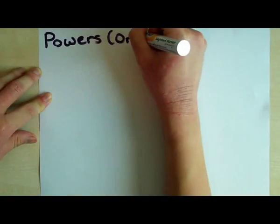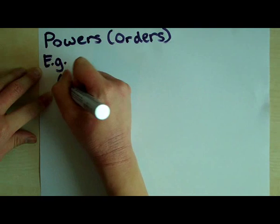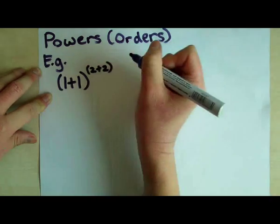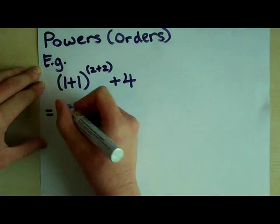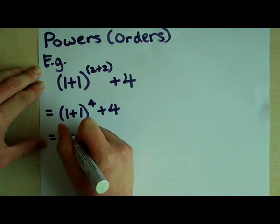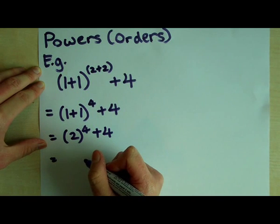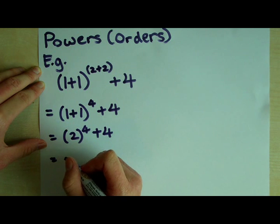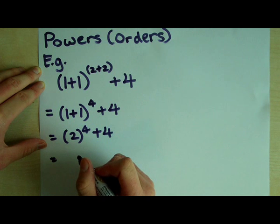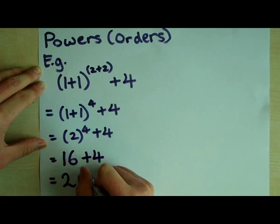Next, let's do powers, or in other words, orders. Powers are exponents. Here is an example: open bracket 1 plus 1 close bracket to the power open bracket 2 plus 2 close bracket plus 4, which equals 2 to the power 4 plus 4. Now, 2 to the power 4 means that you multiply 2 by itself 4 times. So 2 times 2 times 2 times 2 equals 16. Finally, 16 plus 4 equals 20.